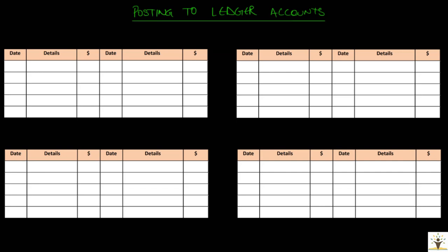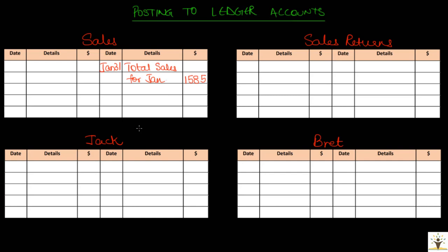Once transactions are recorded in the day books, we need to post them to relevant ledger accounts. From the sales day book and sales returns day book, we can prepare a sales account, a sales returns account, and accounts of various customers. When a sales day book is used, transactions are recorded in total in the sales account — not individually. Total sales for January = $1,585, recorded on the credit side of the sales account on Jan 31. Similarly, total sales returns = $180, recorded on the debit side of the sales returns account on Jan 31.